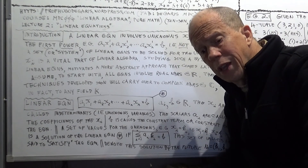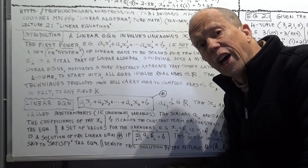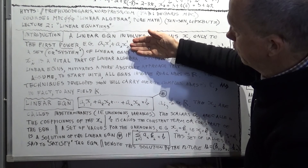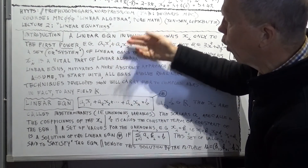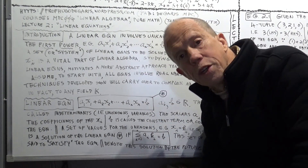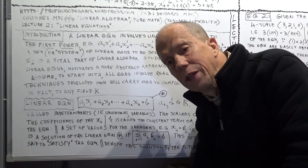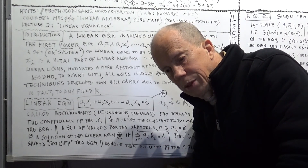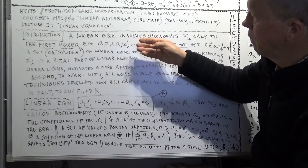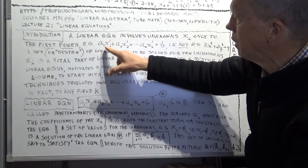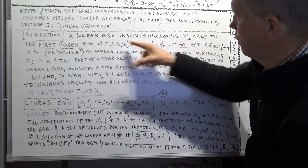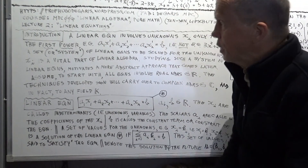The word linear is the adjective of the word line. For example, if you just had two variables, X1 and X2, or X and Y, that would be the equation of a line — that's where the label came from. Then it gets generalized: if you have not just two unknowns but N of them, you still call that type of equation a linear equation.